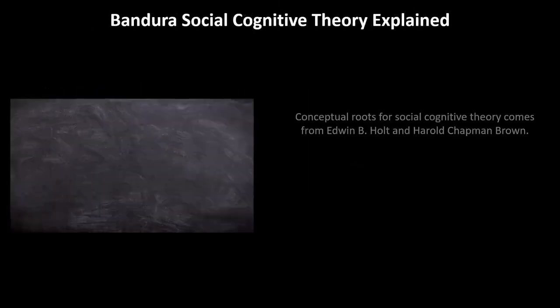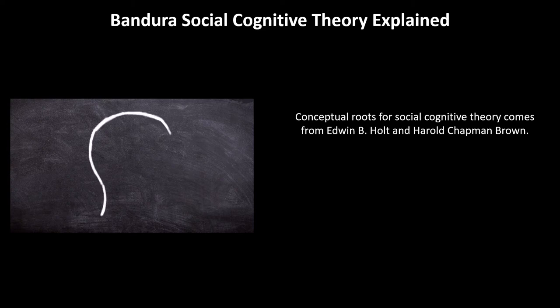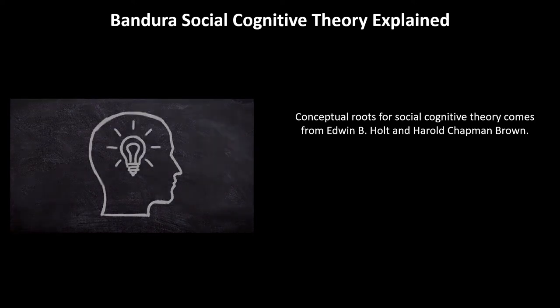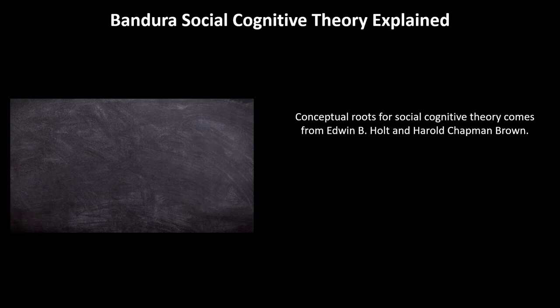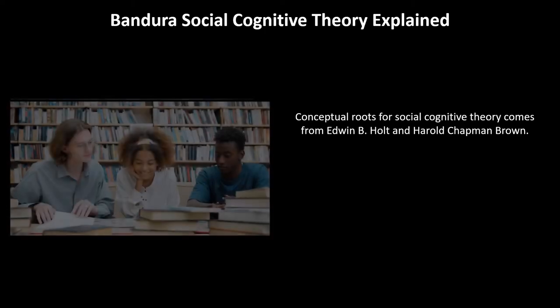The conceptual roots for Social Cognitive Theory come from Edwin B. Holt and Harold Chapman Brown in their 1931 book, theorizing that all animal action is based on fulfilling the psychological needs of feeling, emotion, and desire. Social Cognitive Theory was advanced by Albert Bandura as an extension of his Social Learning Theory. The theory states that when people observe a model performing a behavior and the consequences of that behavior, they remember the sequence of events and use this information to guide subsequent behaviors.